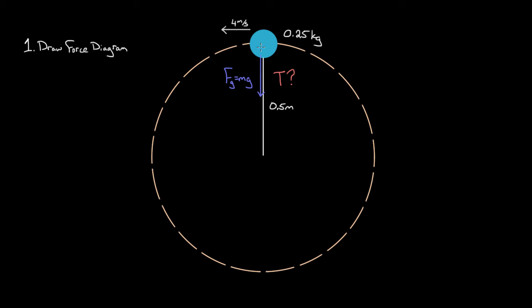A lot of people want to draw the tension going upward, but ropes can't push. Ropes can only pull. So this rope is going to pull — we don't know how much yet, that's what we're trying to find out. This is the force of tension, and we'll label it with a capital T. No matter how you label it, that tension points in toward the center of the circle, because this rope is pulling on the mass.